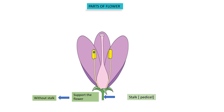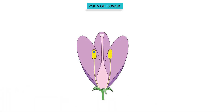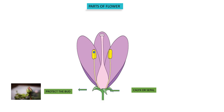Do all plants have a stalk? No. Some are without the stalk and they are called sessile. There are four main whorls of flowers. The first whorl is the green sepals, collectively called the calyx. Its function is to protect the flower when it is in the bud stage.